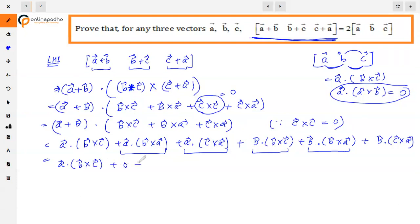Now we have A dot B cross C, this is zero, plus B dot C cross A. The reason behind that is we know that A cross A equals zero, so this is zero.